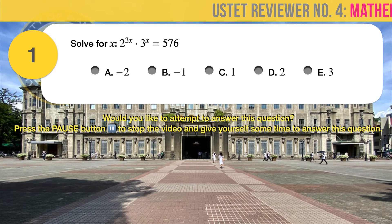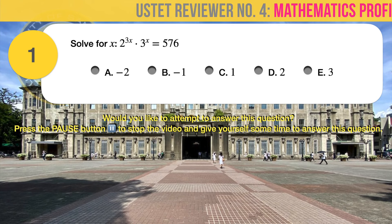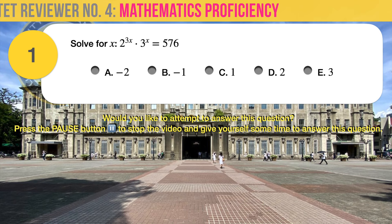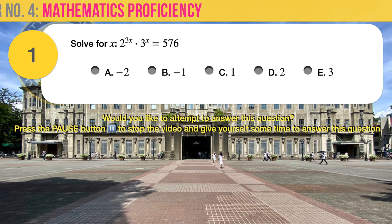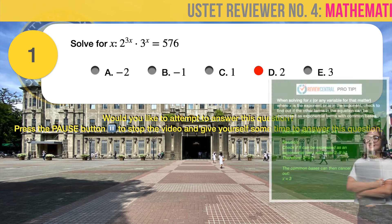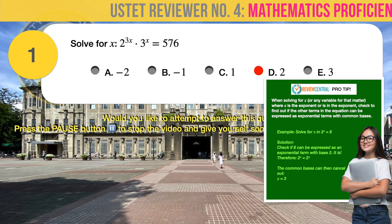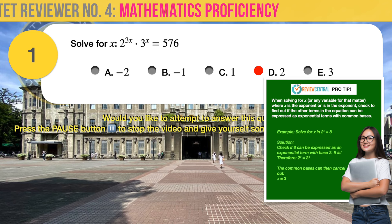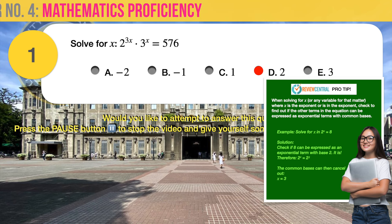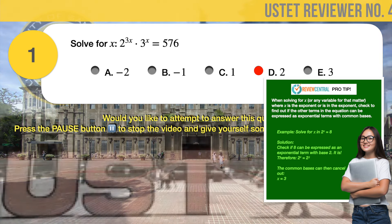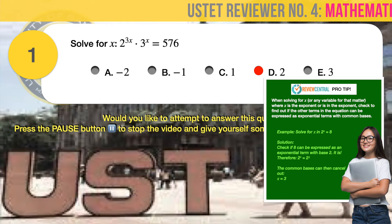Question number 1. Solve for x in the equation: 2 raised to 3x, times 3 raised to x, equals 576. The correct answer is D, 2. This problem involves exponential and logarithmic expressions and equations. Here is a Review Central Pro tip: when solving for x where x is the exponent, check to find out if the other terms in the equation can be expressed as exponential terms with common bases.